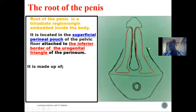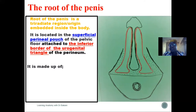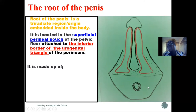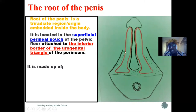For the root of the penis, it is where the penis emerges from, with distinct features. The root is located in the superficial perineal pouch of the pelvic floor, attached to the inferior body of the urogenital triangle. We have the anal triangle posteriorly, and more anterior to it is the urogenital triangle — a triangle containing organs of the urinary and genital tract. It is at the inferior border of the urogenital triangle that we have the root of the penis.